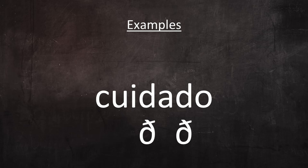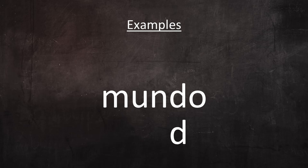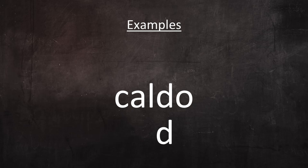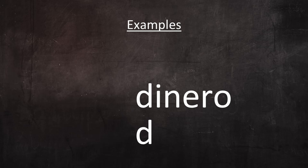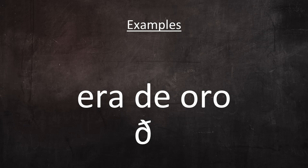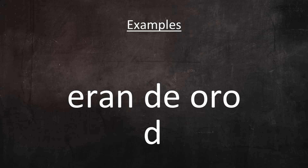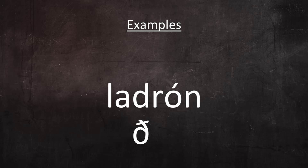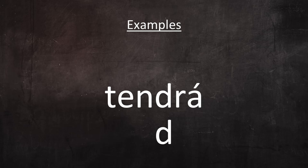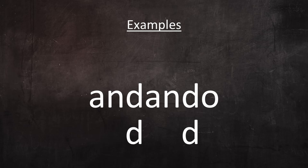'Queda.' 'Cuidado.' 'Verdadero.' 'Mundo.' This D is a stop because it comes after N. 'Caldo.' This D is a stop because it comes after L. 'Dinero.' This D is a stop because it comes at the beginning of an utterance. 'Ese dinero.' And in this case, the same D in the same word is pronounced as a fricative because it comes after a vowel. 'Era de oro.' This D is a fricative because it comes after a vowel. 'Eran de oro.' And here, the same D in the same word is a stop because it comes after N. 'Ladrón.' 'Tendrá.' This D is a stop because it comes after N. 'Andando.' These Ds are both stops because they come after N.